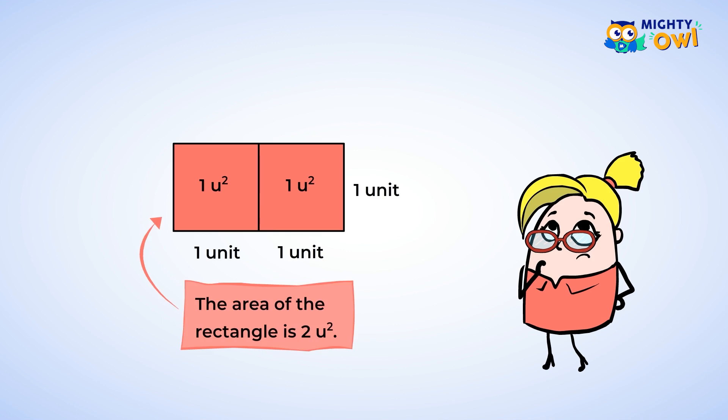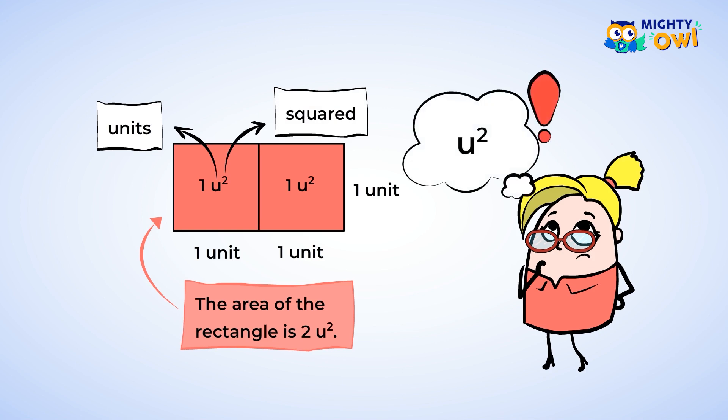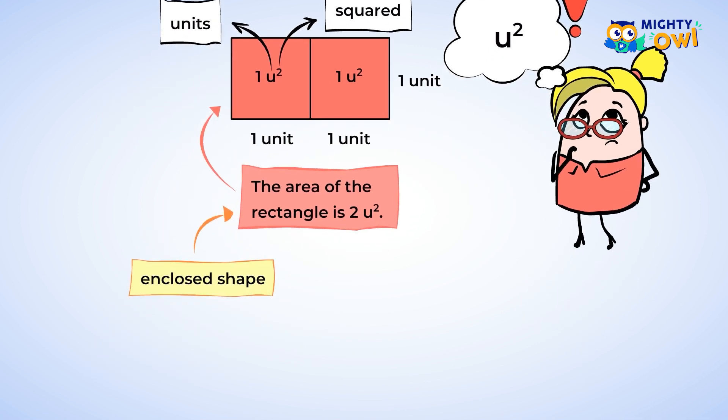The U stands for units. And you see that two that's over the U? That is read as squared. As we continue to learn about area, it's important to remember to have the two over the measurements. And in case you were wondering, that two is because we measured two sides of the shape. All enclosed shapes have an area.